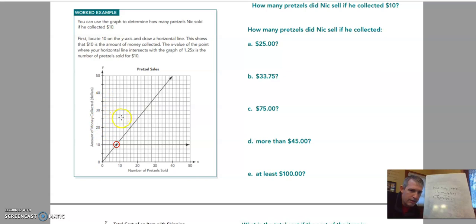And I'm going to go across on my graph until I get to be right there. And then I'm going to go straight down. I think I lost it a little bit. I'm going to go straight down. There it is. Right over the number 20. So he sold 20 pretzels if he earns $25.